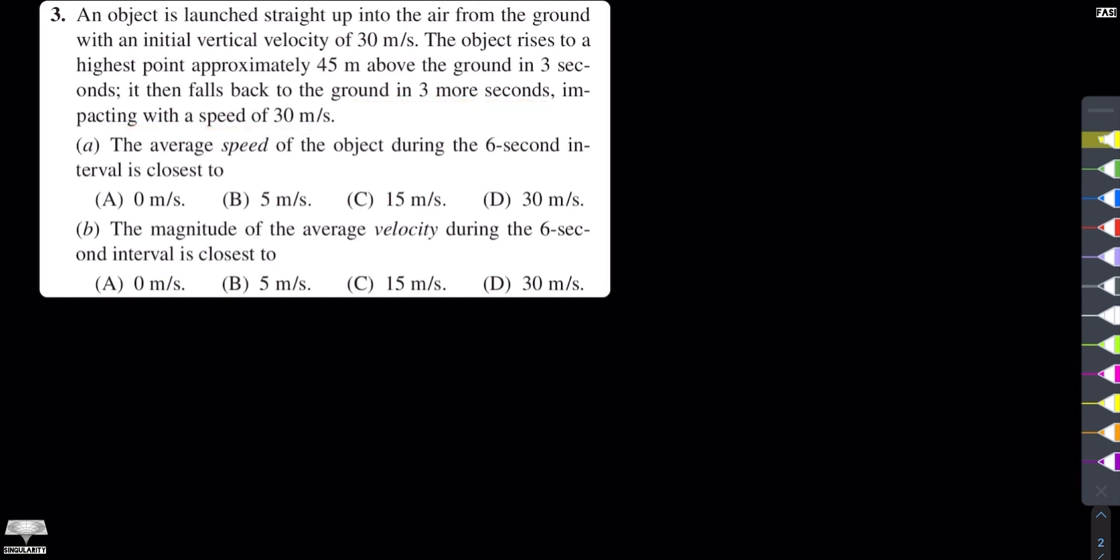The average speed - so the first part of the question is: the average speed of the object during the 6 second interval is closest to. And then the second part of the question is: the magnitude of average velocity during the 6 second interval is closest to. So we have both average speed and average velocity.